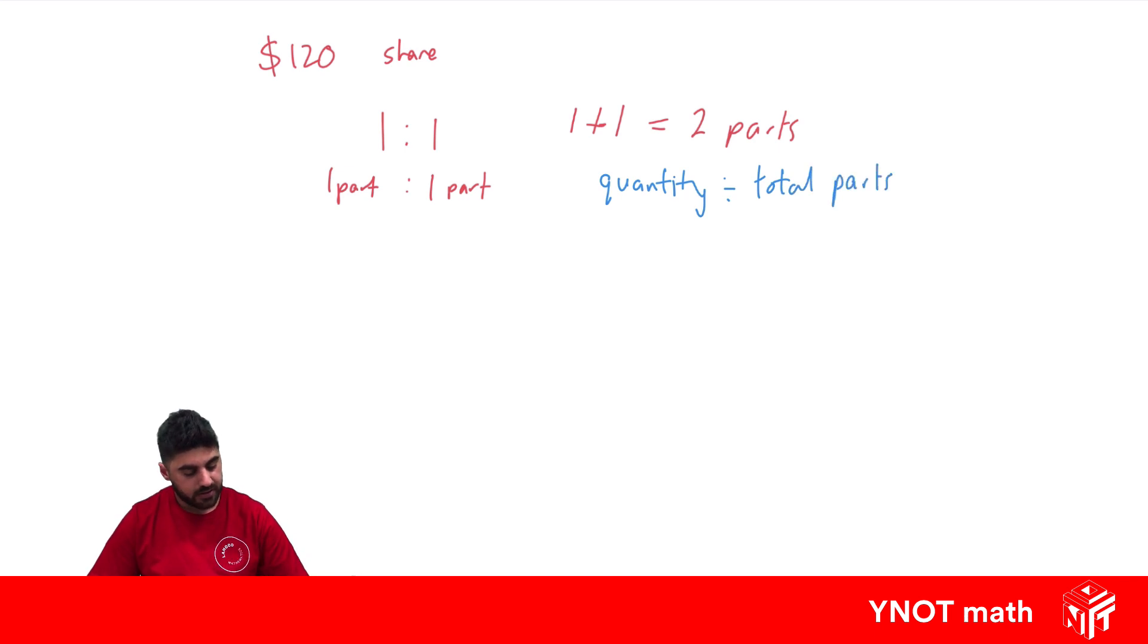So we're going to take our $120, because that's the quantity we want to divide, divide it by 2, because that's the total parts. And that's going to give us $60. And once you do this, this represents the value for 1 part.